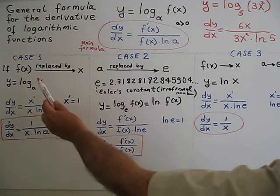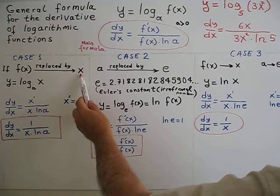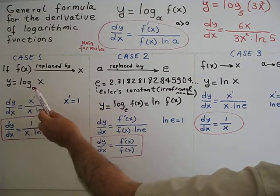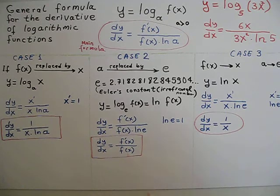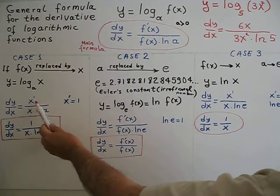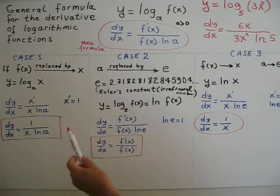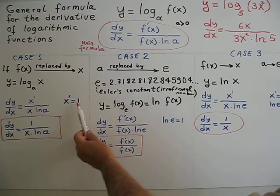If f of x is replaced by x, then y equals log base a of x. We get this. In this case, the derivative, if we use the general formula, is x prime over x ln a. x prime equals 1.